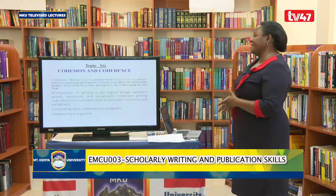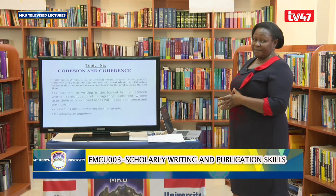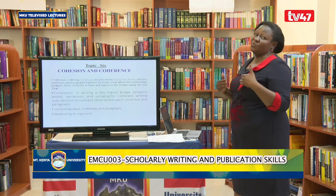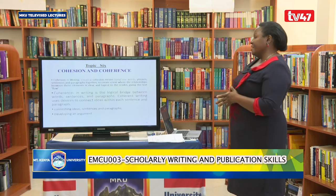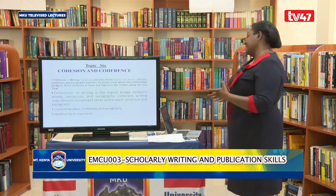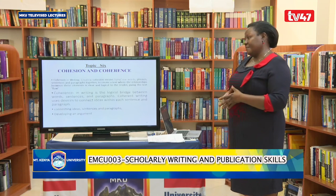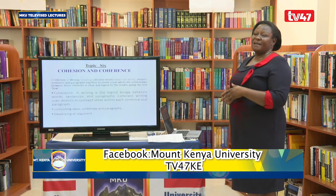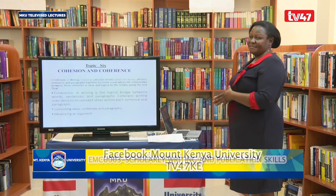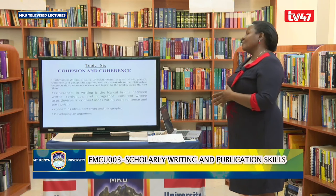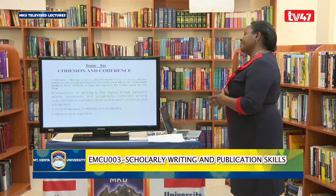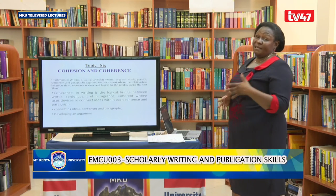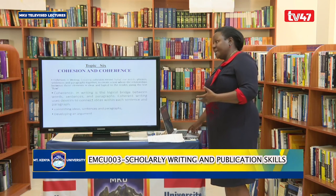Coherence in writing is the logical bridge between words — the way in which you connect one word to another, one sentence to another, one paragraph to another. Coherent writing uses devices to connect ideas within each sentence and paragraph. Some of the devices we normally utilize include words such as 'however,' 'but,' and 'then.' Those words help us establish and maintain cohesion and coherence in our work, connecting ideas, sentences, and paragraphs, and helping us develop a cohesive argument.